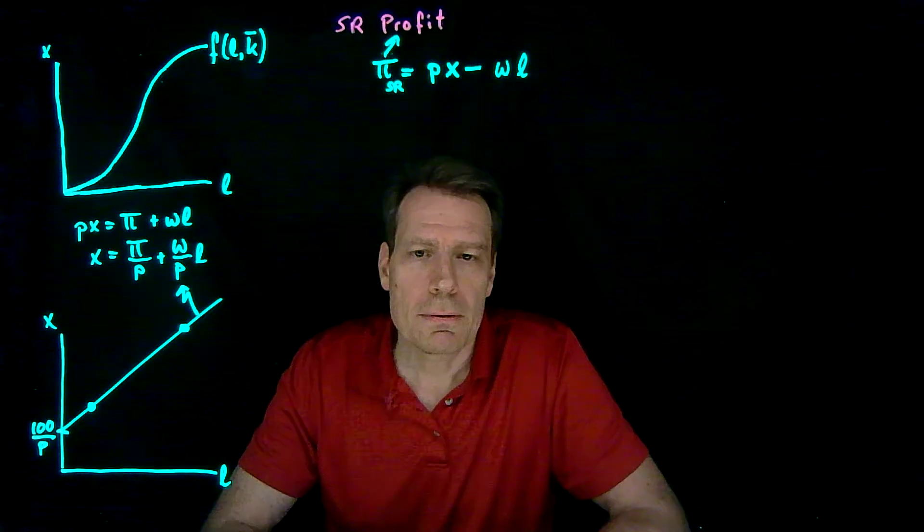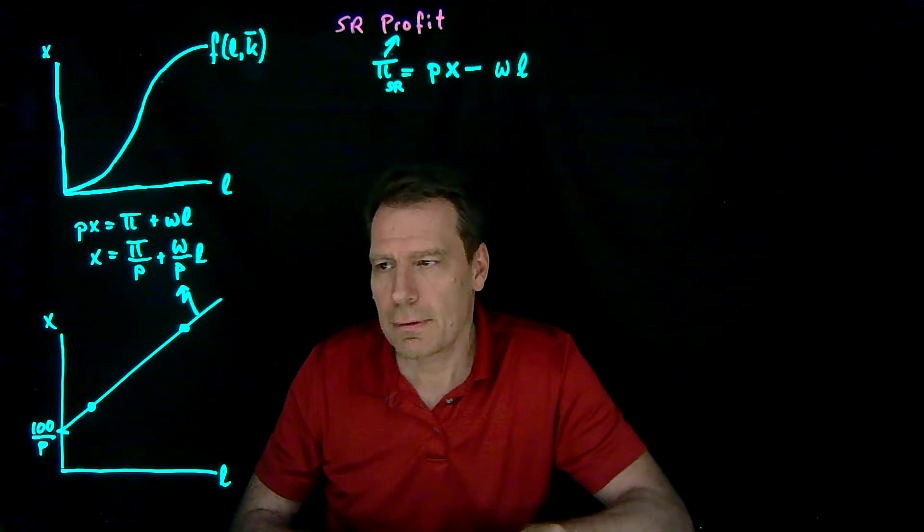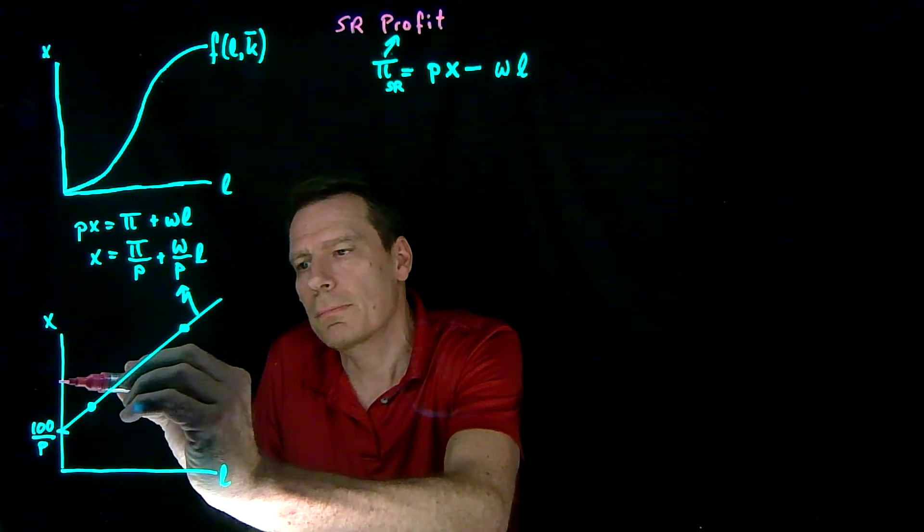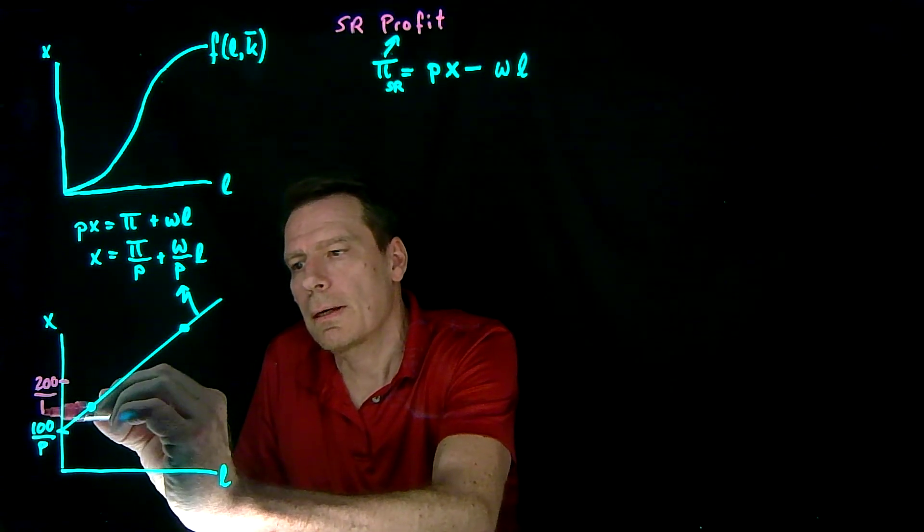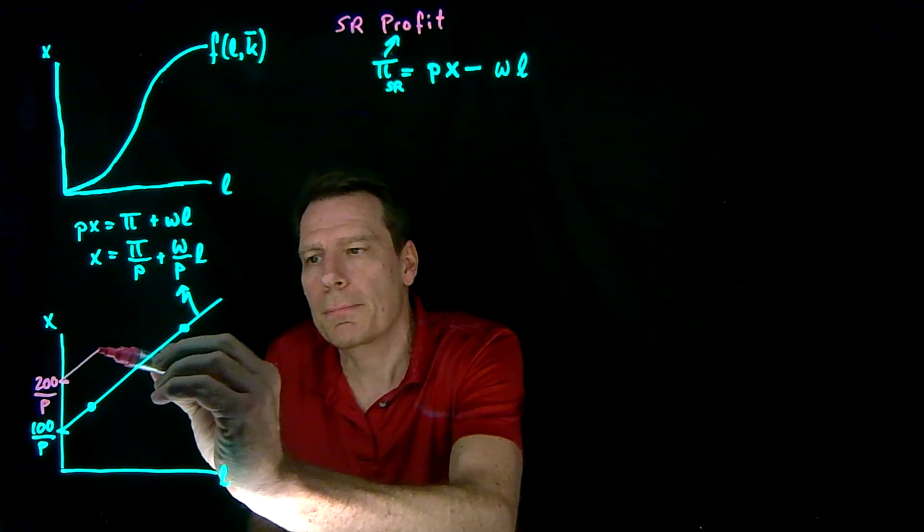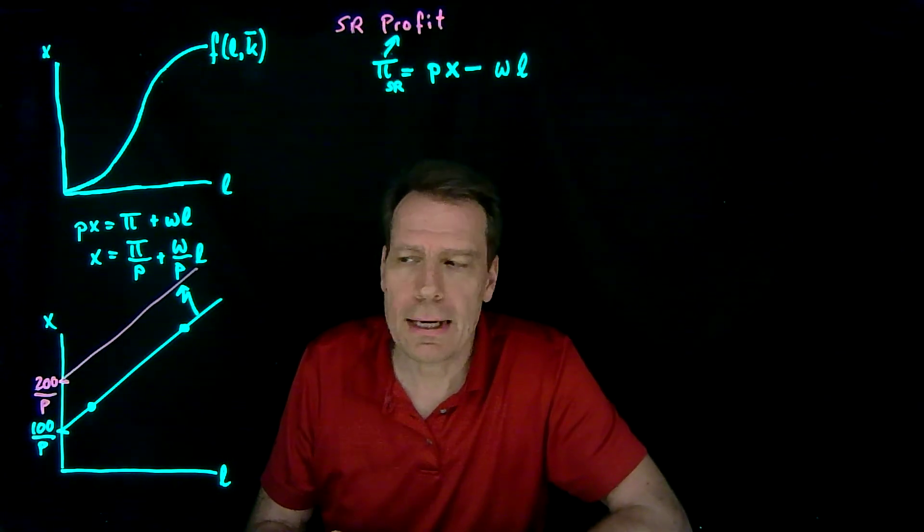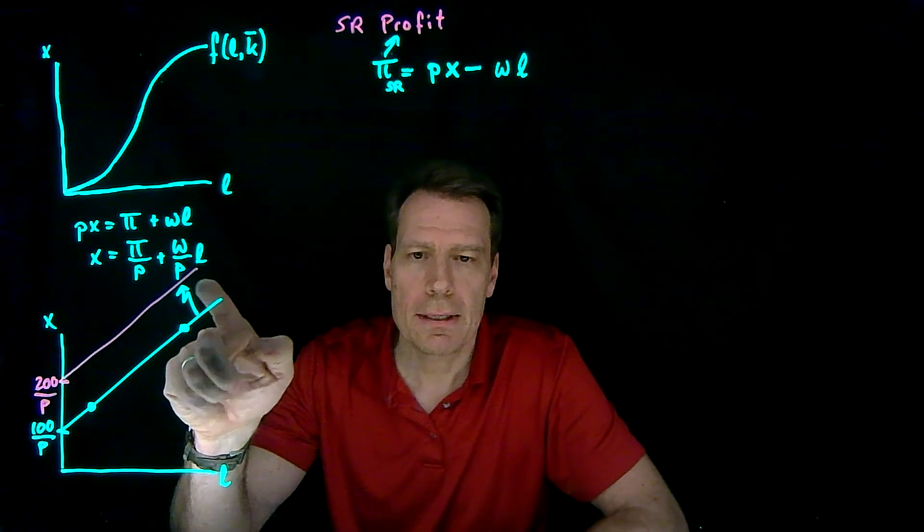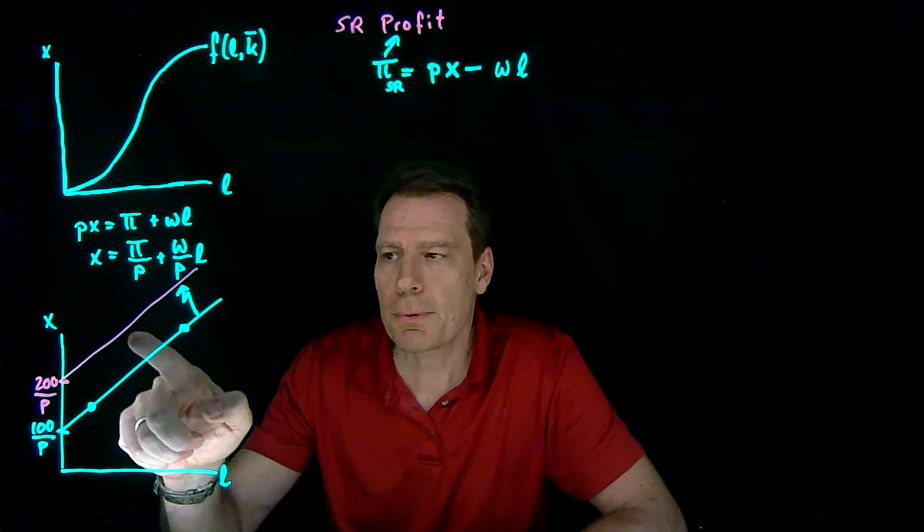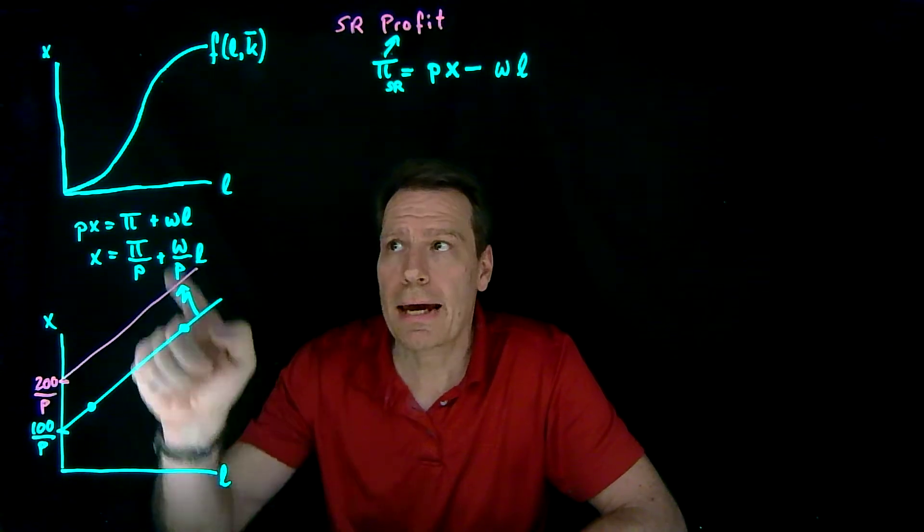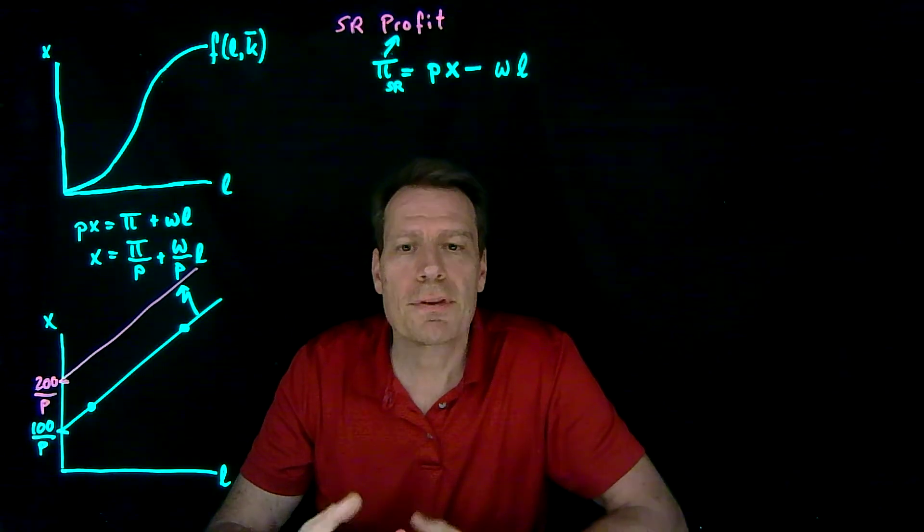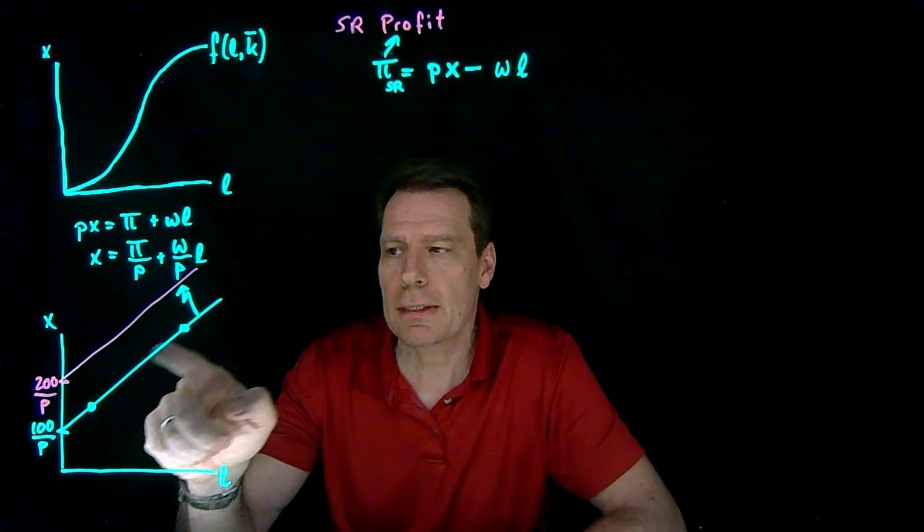Now, suppose profit was $200 instead. If it was $200, then we'd have an intercept of 200 divided by p, but the slope would still be w over p. We haven't changed w or p. So that would indicate all the production plans that would result in a profit of $200. Now, some of the production plans on these profit lines aren't actually technologically feasible. They lie somewhere out here. But nevertheless, if they were feasible, they would result in these profit levels.